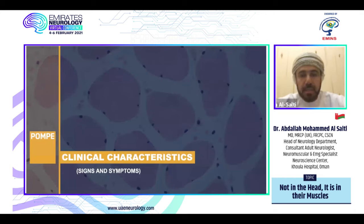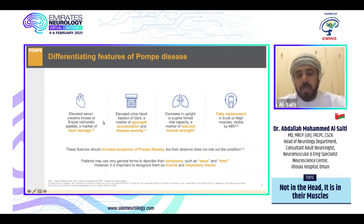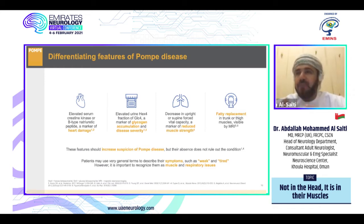Differentiating Pompe disease from other myopathies: it is associated with elevated serum CK in around 70% of cases, elevated urine hexose tetrasaccharide indicating glycogen accumulation, and decreased upright or supine forced vital capacity as a marker of reduced muscle strength. Fatty replacement in the trunk or thigh muscles detectable by MRI increases suspicion of Pompe disease, but its absence does not rule it out. Patients may variably describe their symptoms as weakness, tiredness, fatigue, or pain.